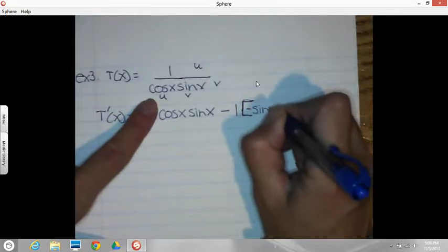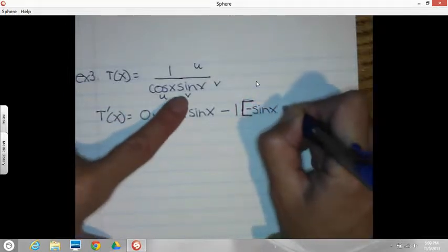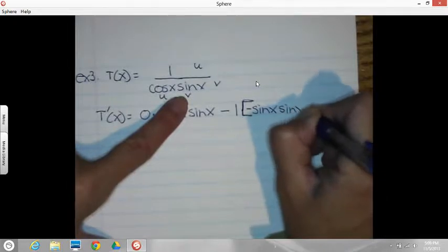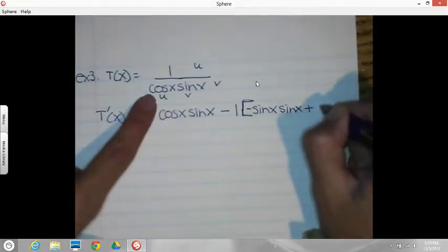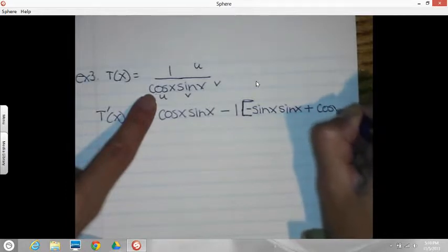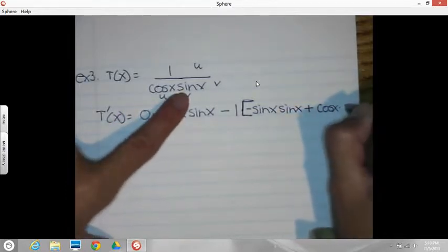x times by the v, which is sine x, plus keep the first one the same, cosine x. Derivative of the v is cosine x.